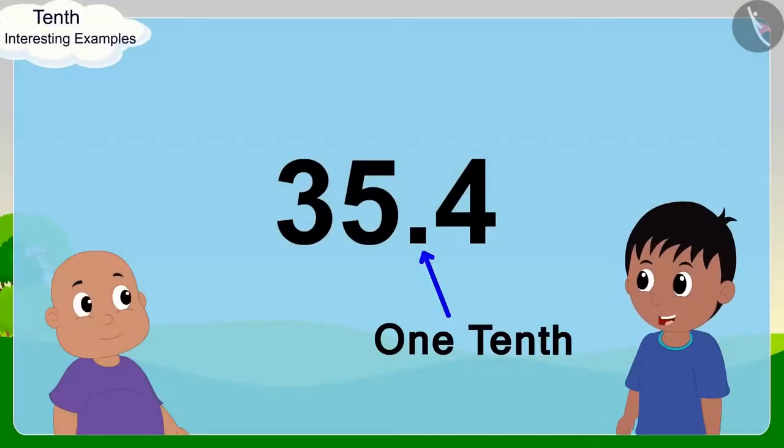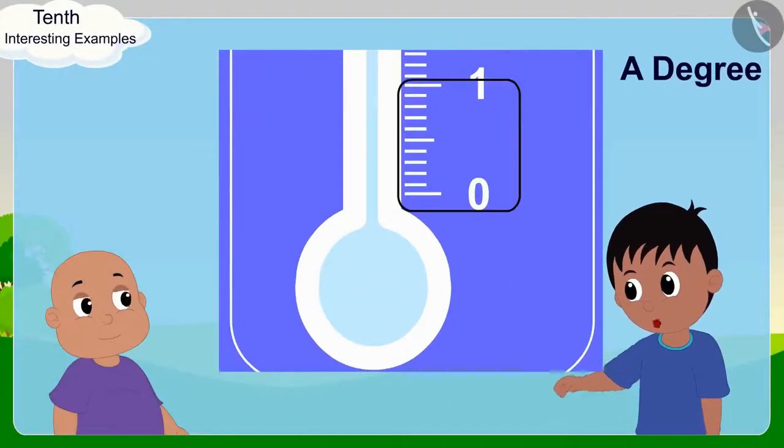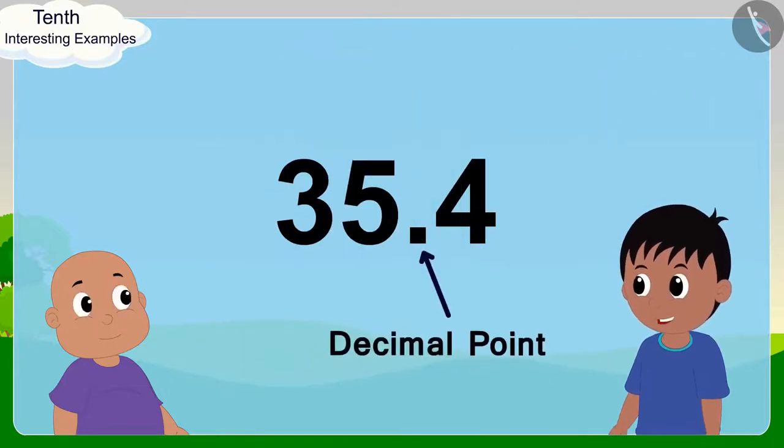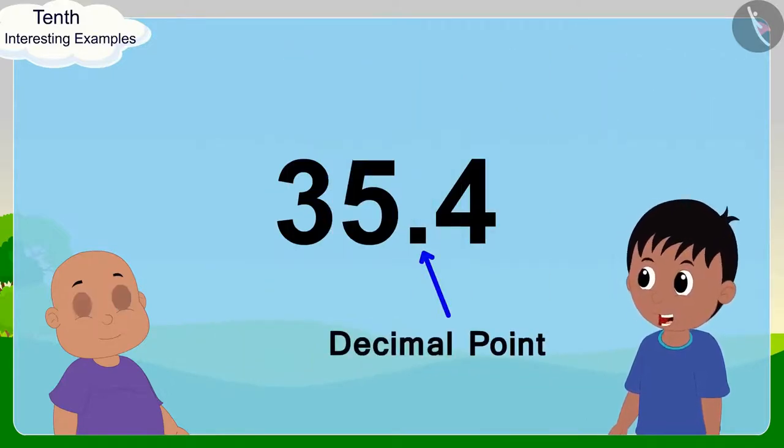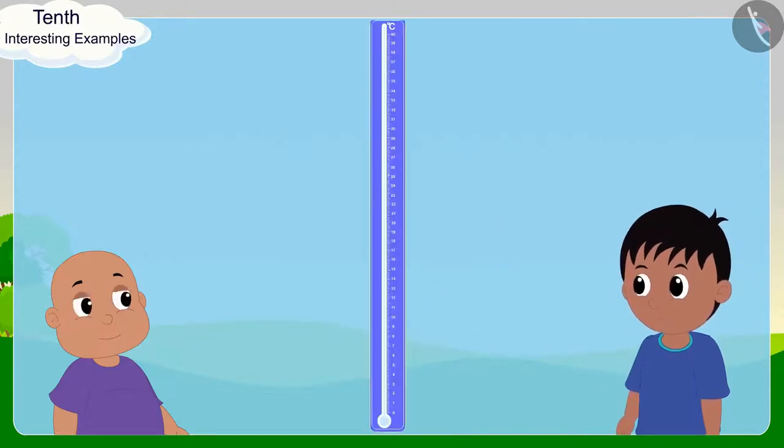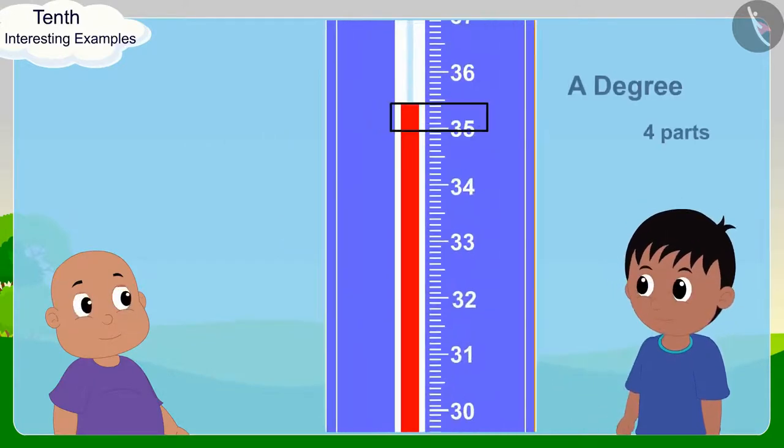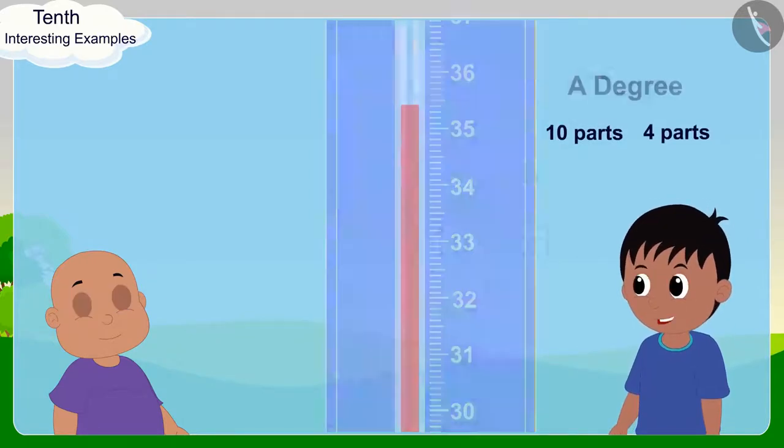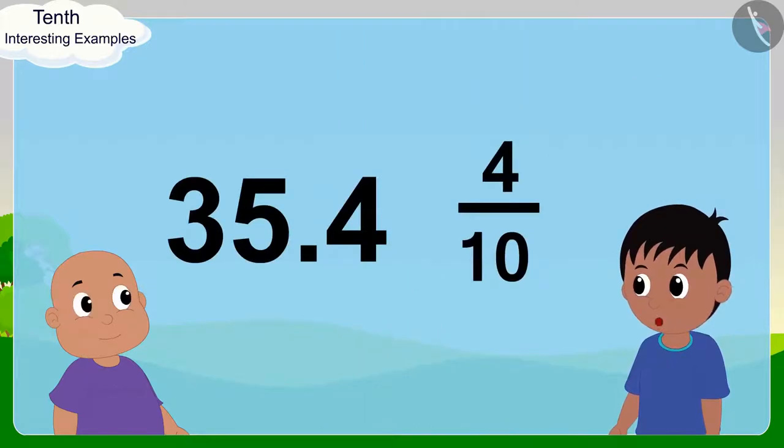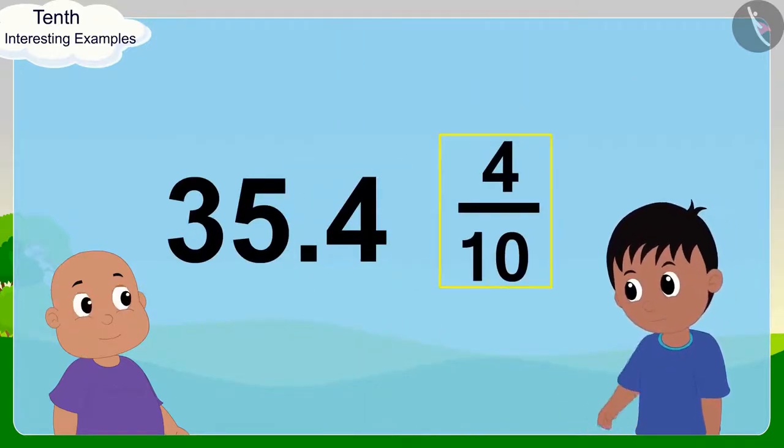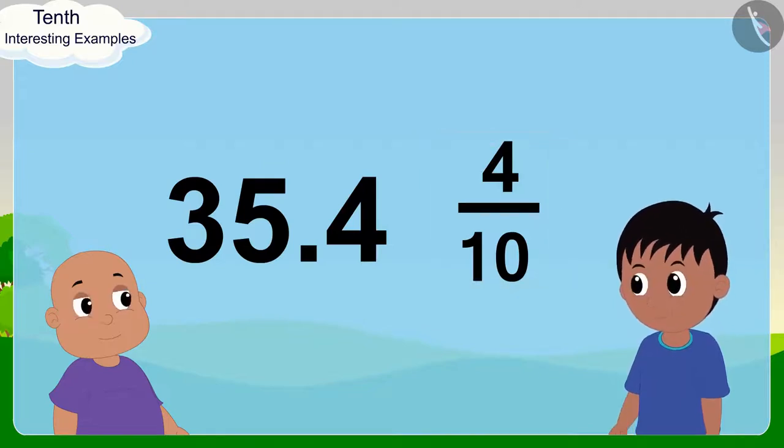One tenth indicates that a degree is being divided into 10 equal parts. And because the number after the decimal point is 4, we can say that here we are taking 4 out of the 10 parts of a degree. In this way, we can also write 0.4 as 4 tenths in the form of a fraction. Raju explained to Bablu.